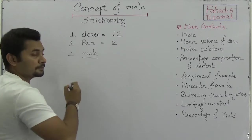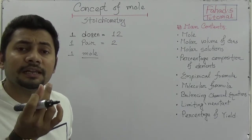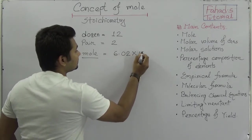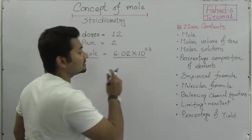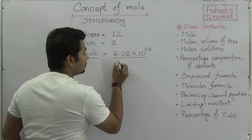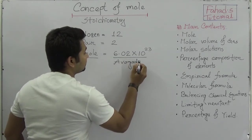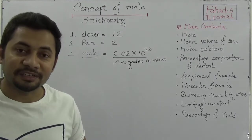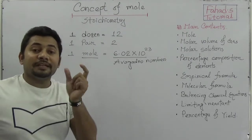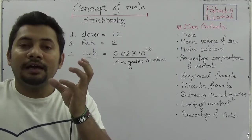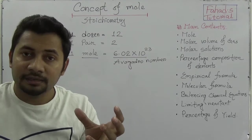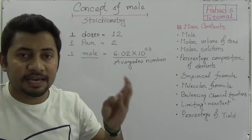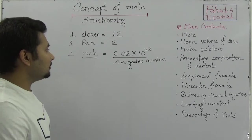Whenever in chemistry we say 'one mole', this word expresses a fixed number, and this is 6.02 times 10 to the power 23. This is a huge number and it is known as Avogadro's Number. So why is it important to learn what a mole is? Mole means an amount — an amount where this number of ions, this number of molecules, or this number of atoms is contained. That is called a mole.